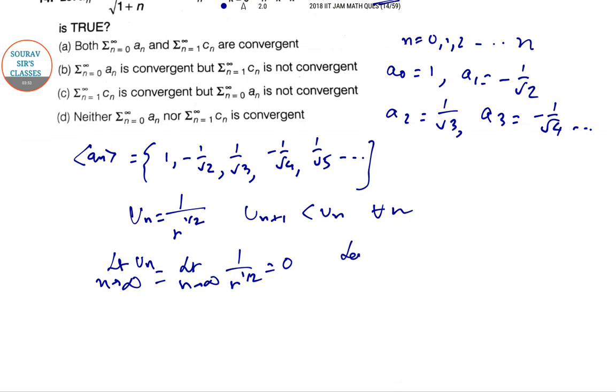So here we have to do a test which is called the Leibniz test, L-E-I-B-N-I-T-Z, Leibniz test. So the series a_n is less than 0, so it's a convergent series. This is a sequence, so the sequence c_n is convergent.